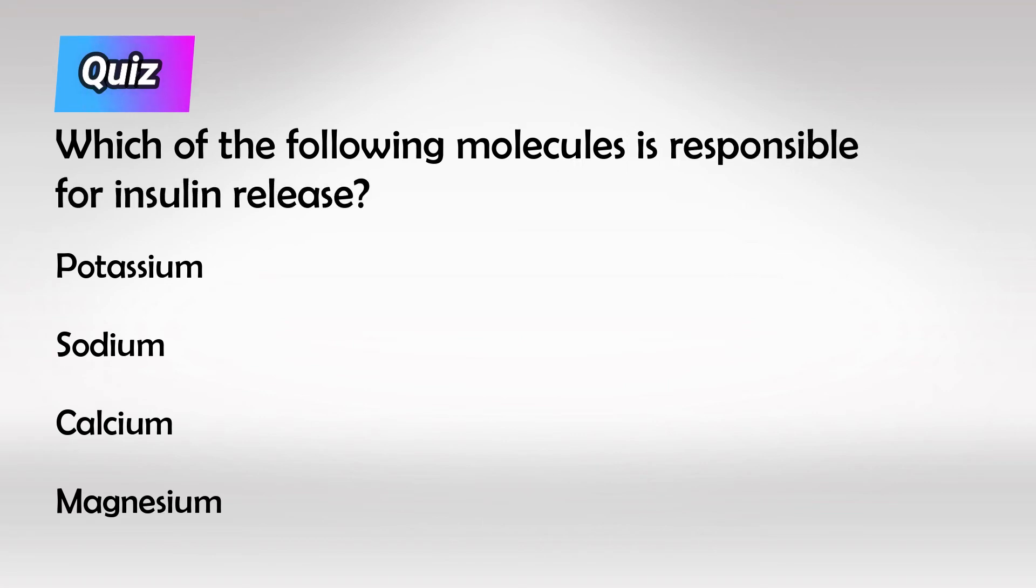Inside the beta cells, influx of which of the following molecules results in insulin release? The answer is calcium. Alright guys, that's all I have. Hopefully this helps and thank you so much for watching.